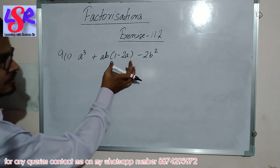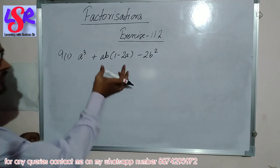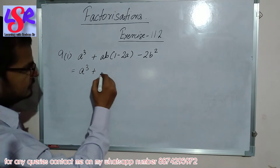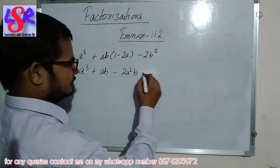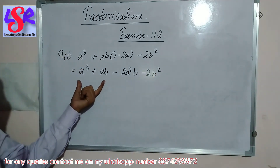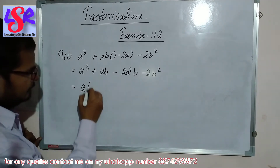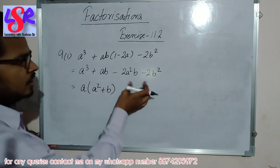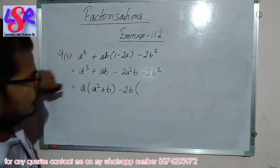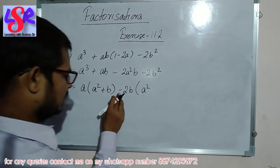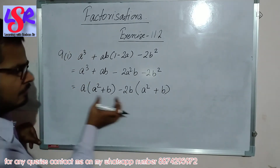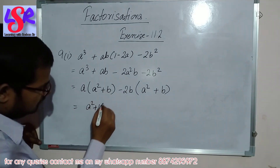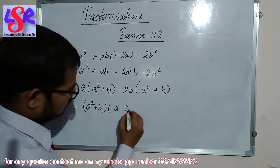Question number 9, first part — here we are having aq plus ab(1 minus 2a) minus 2b squared. Opening the bracket gives aq plus ab minus 2a squared b minus 2b squared. From the first two we take a as common, leaving a squared plus b. From the last two we take minus 2b as common; the sign changes, so we are left with a squared plus b. The bracket a squared plus b is common, so the answer is (a squared plus b)(a minus 2b).